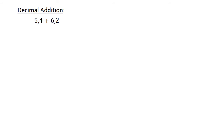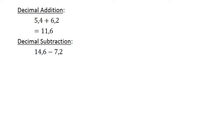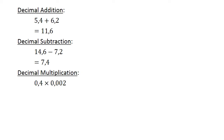Decimal addition. 5.4 plus 6.2 equals 11.6. Decimal subtraction. 14.6 minus 7.2 equals 7.4. Decimal multiplication. 0.4 times 0.002 equals 0.0008.